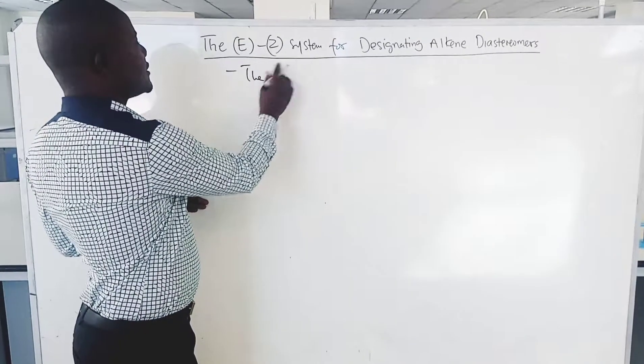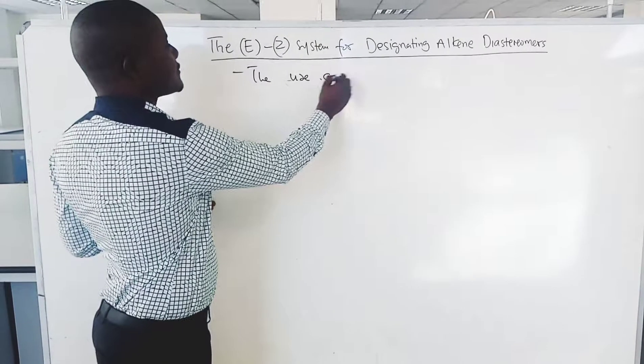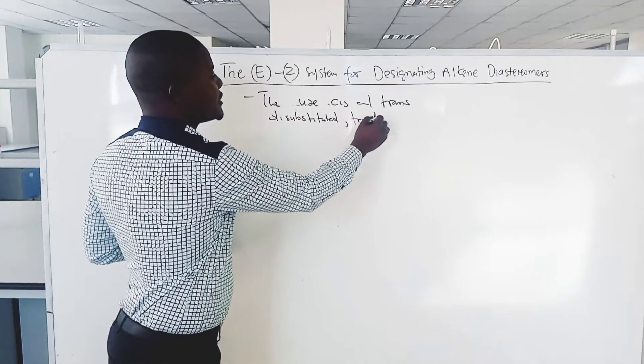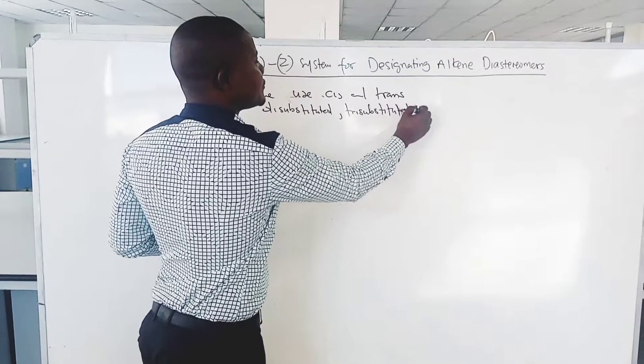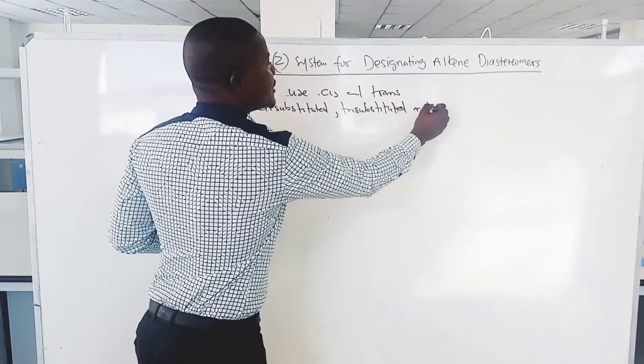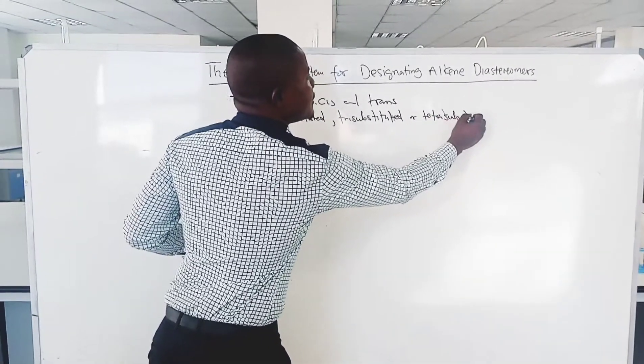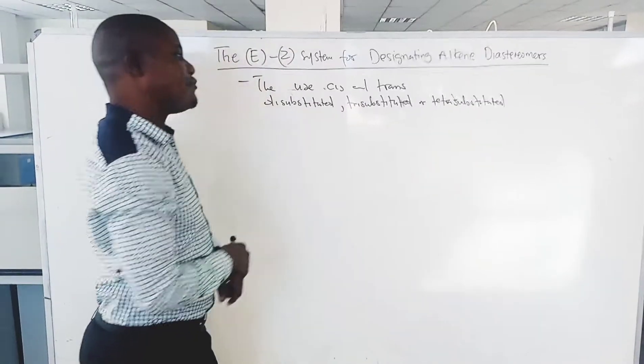The use of cis and trans to designate disubstituted, trisubstituted, or tetrasubstituted alkenes is either ambiguous or does not apply at all.